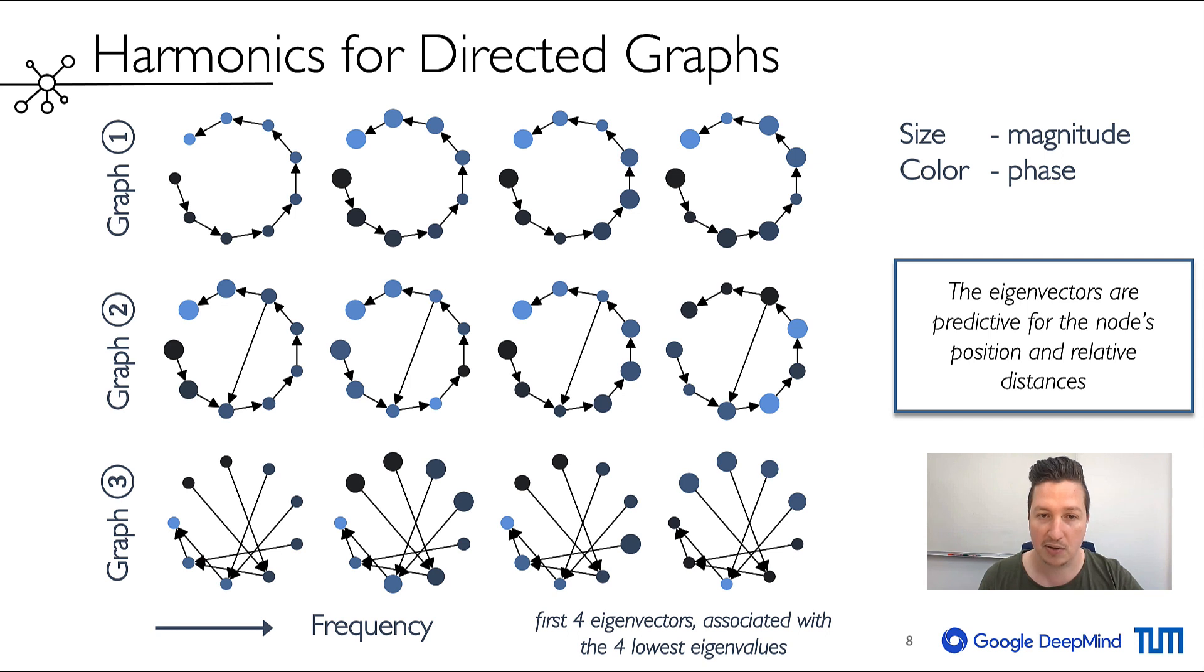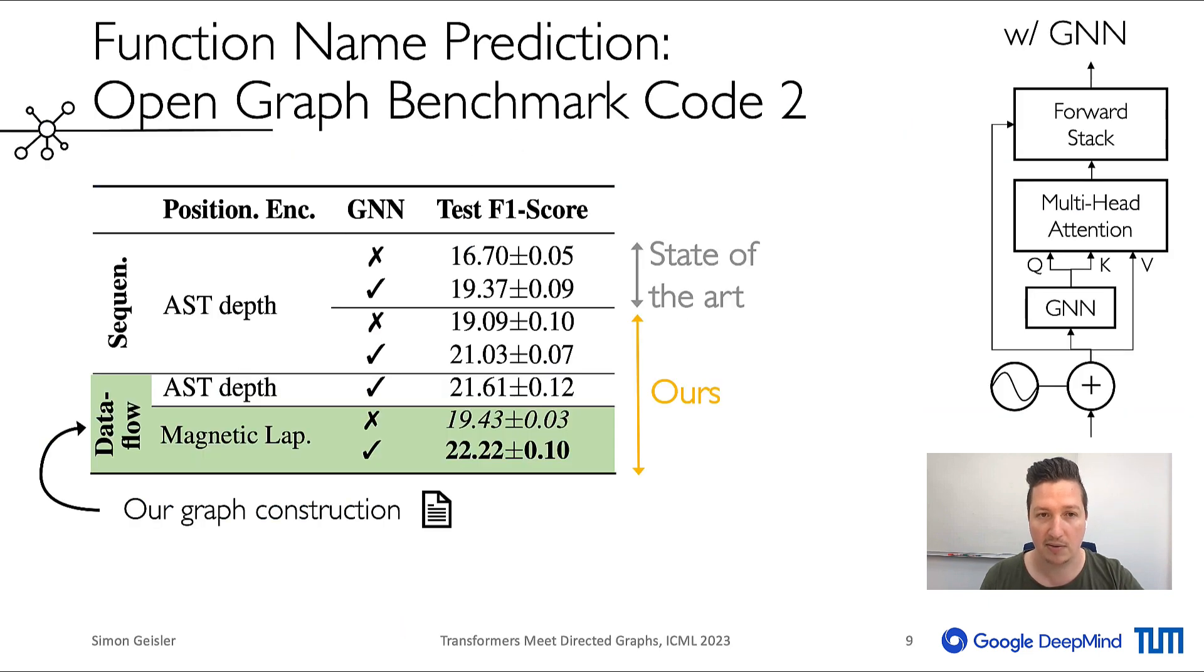To the left we show the lowest frequency and gradually increase the frequency to the right. This qualitatively shows how the eigenvectors plausibly encode the node's position in the directed graphs. Consider pausing the video for a more detailed look.